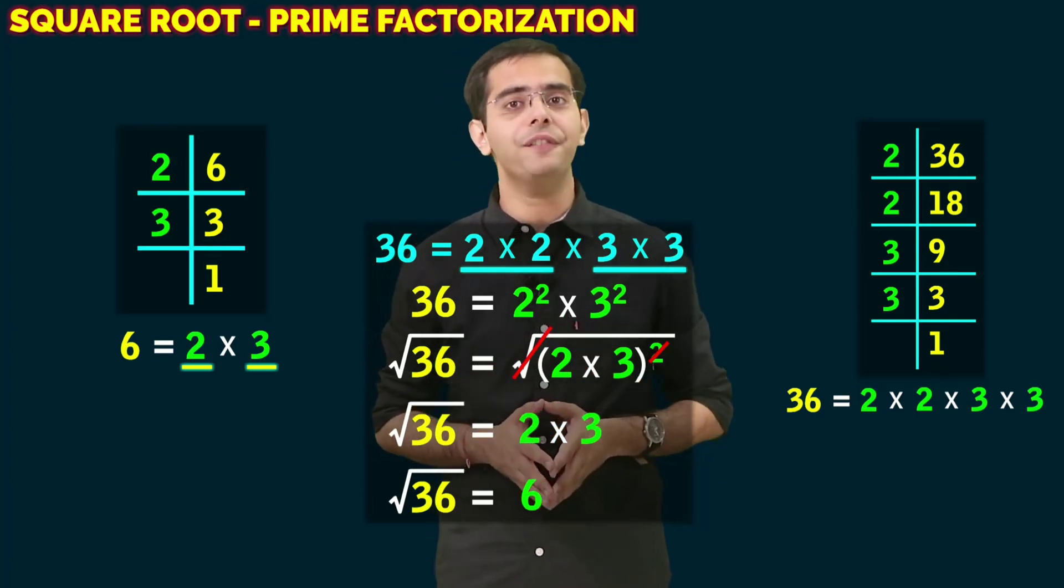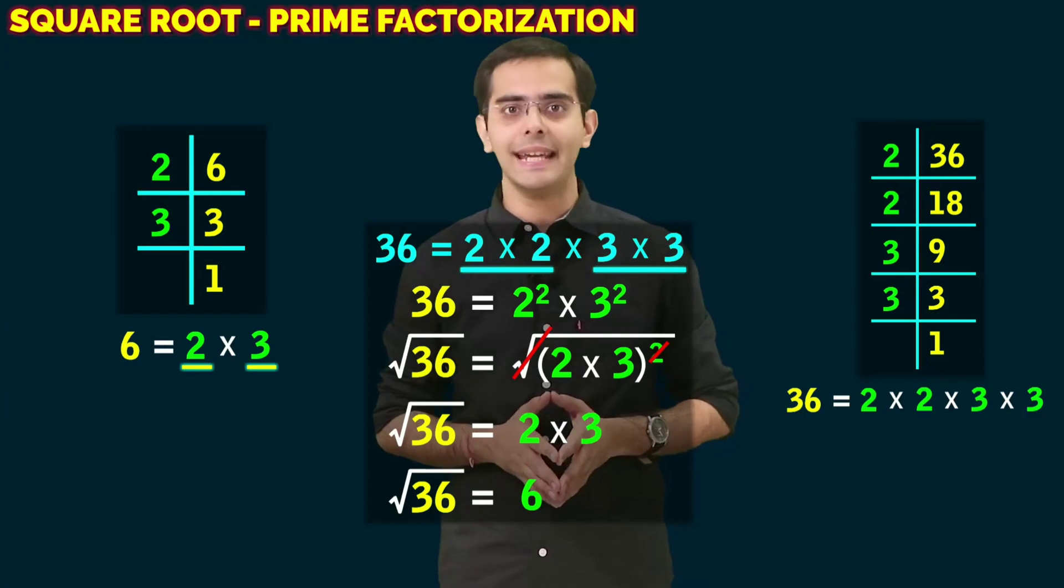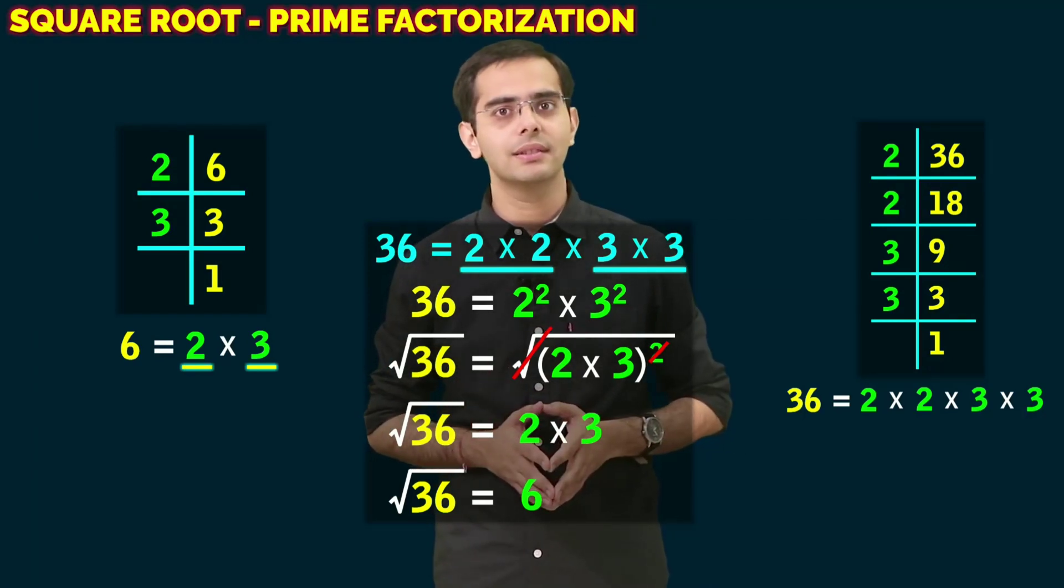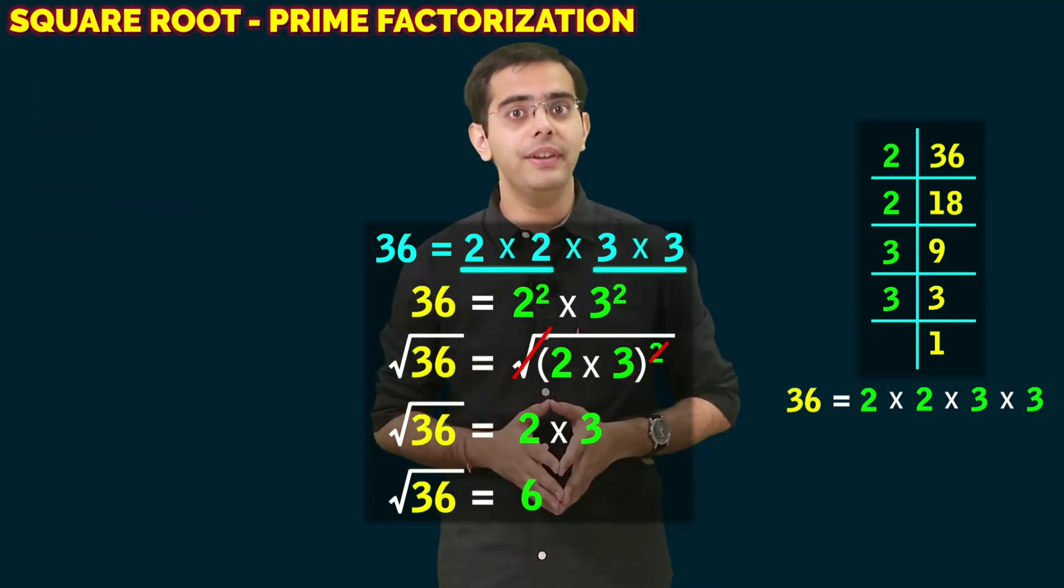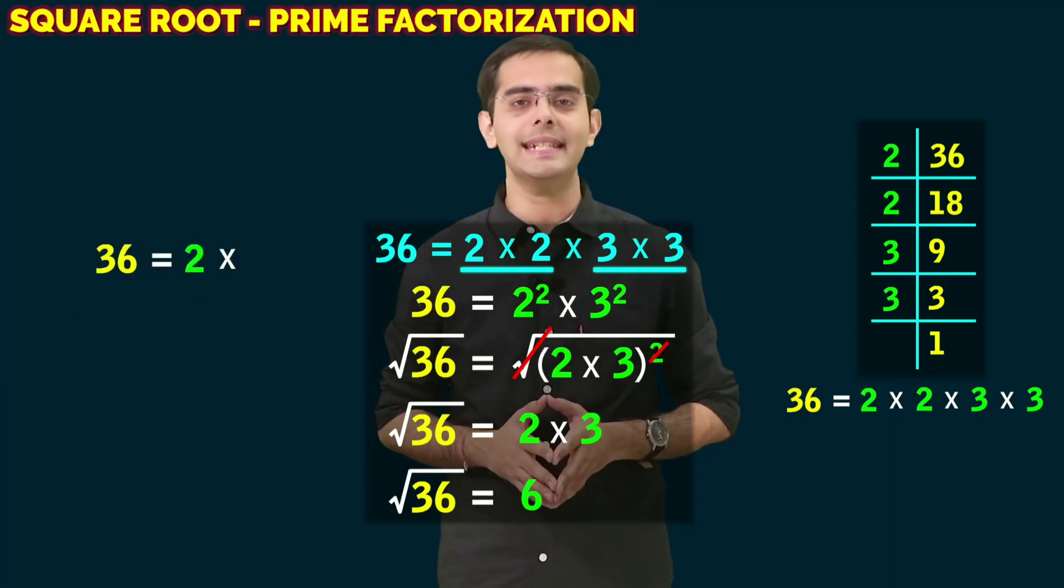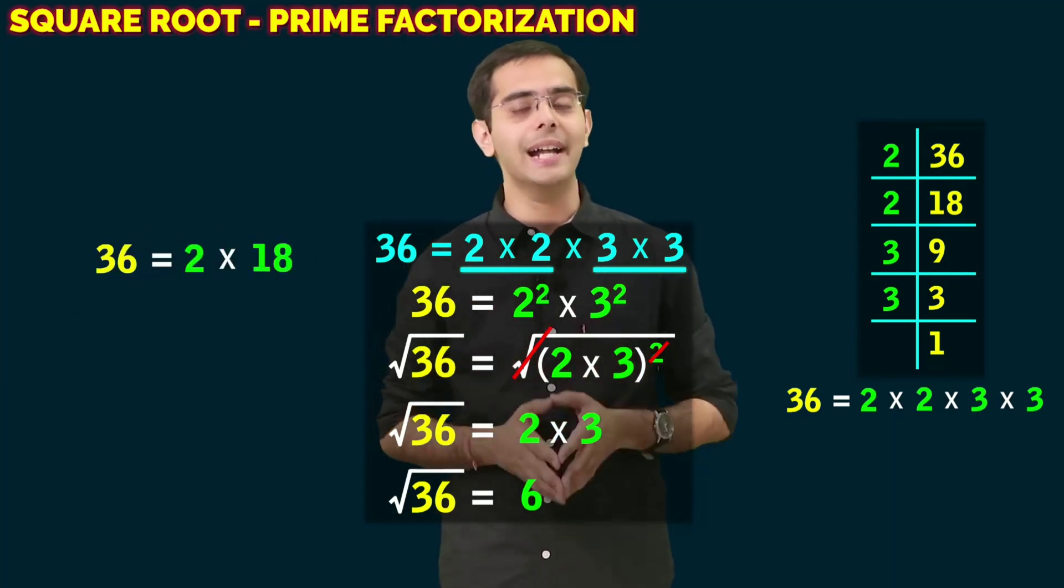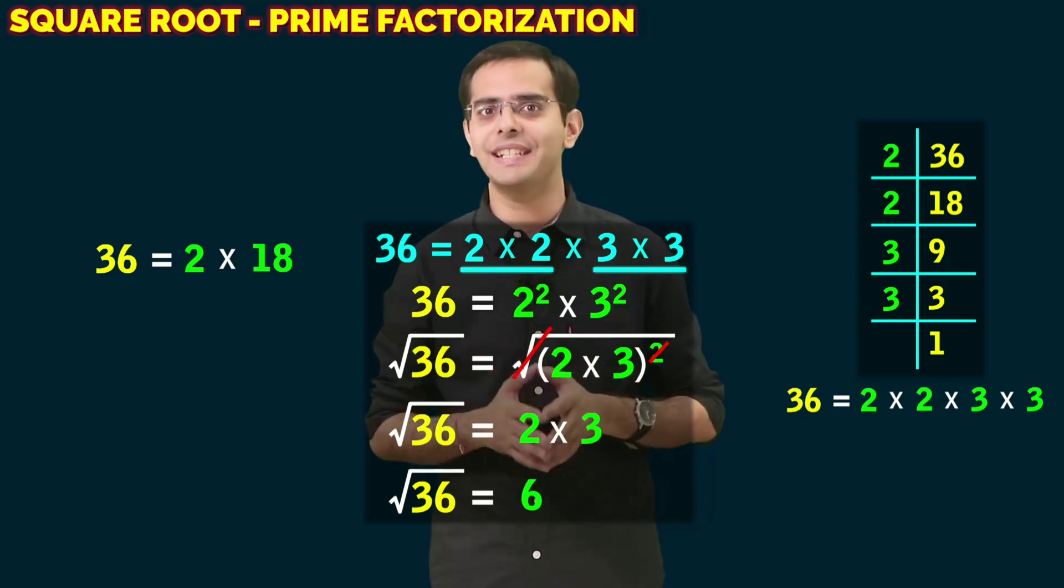Students, do you know why we have used prime factors and not any other factors? For example, we could have expressed 36 as 2 × 18. But we didn't do it that way. Can you think of a reason for this?